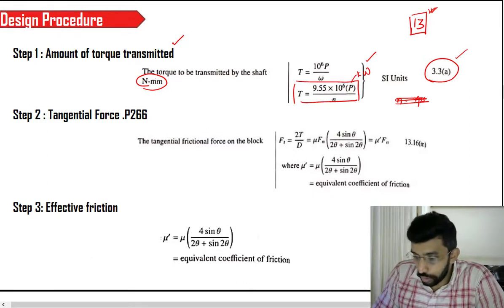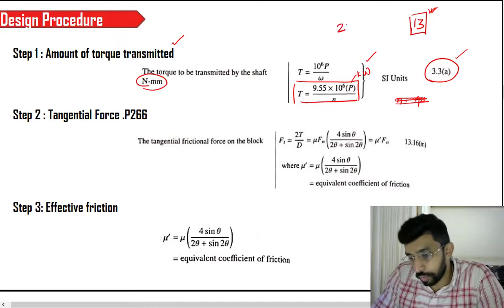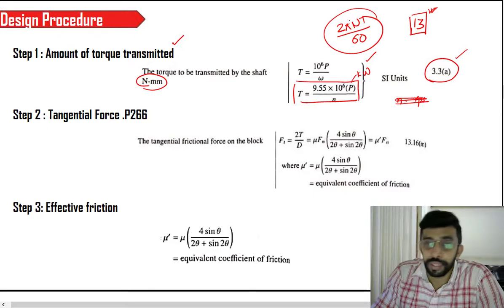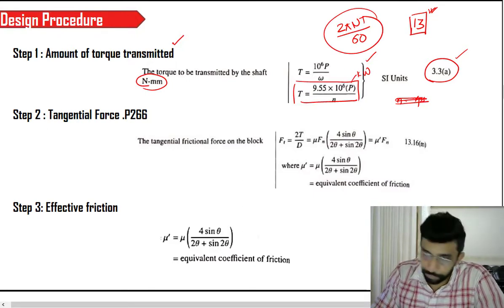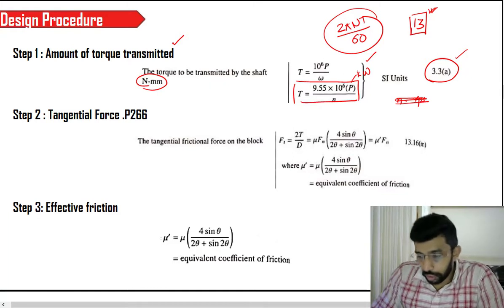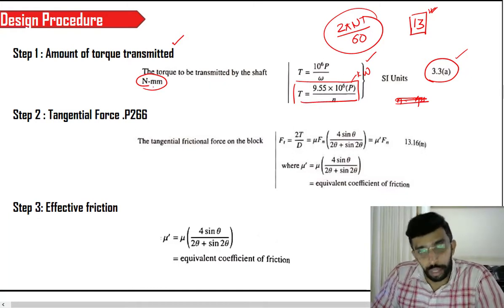This is the alternative form of the equation 2πNT/60 — they are one and the same. So if you use kilowatts, you are going to get the value of torque in Newton-meters.